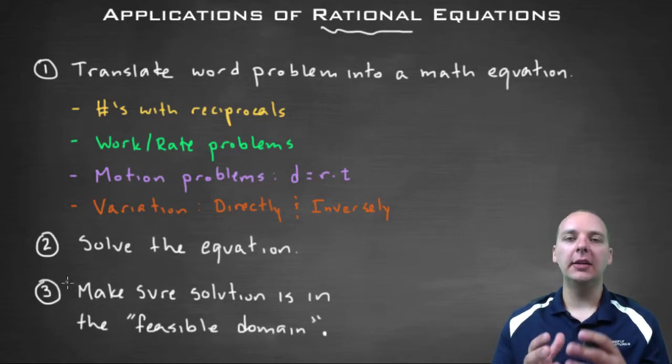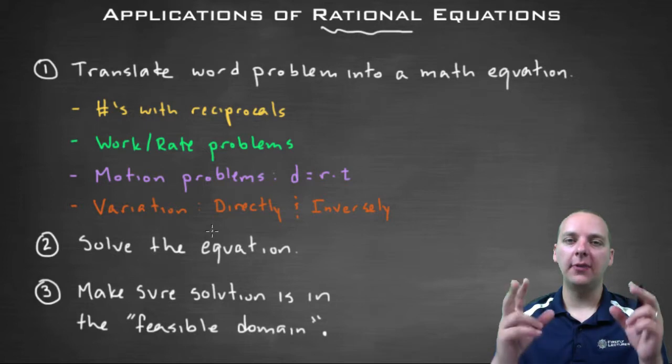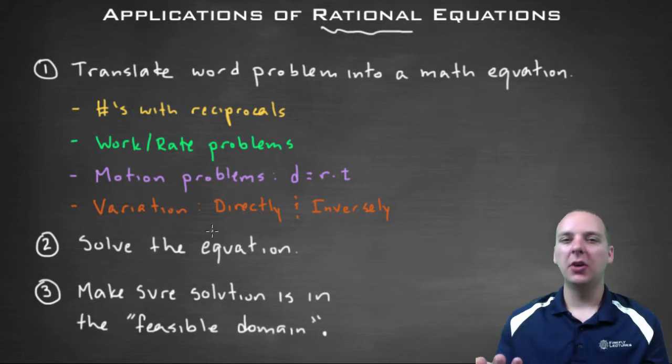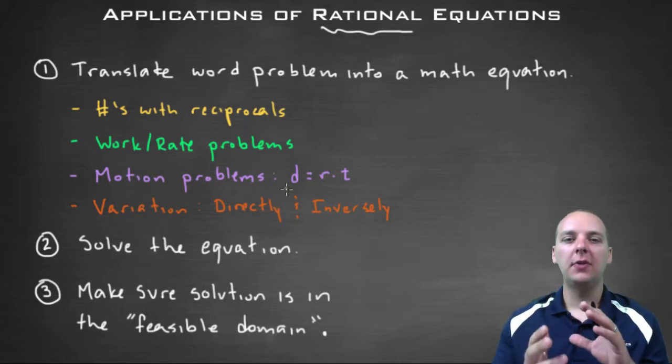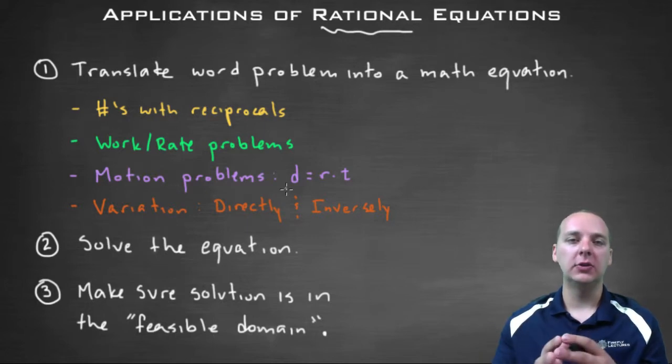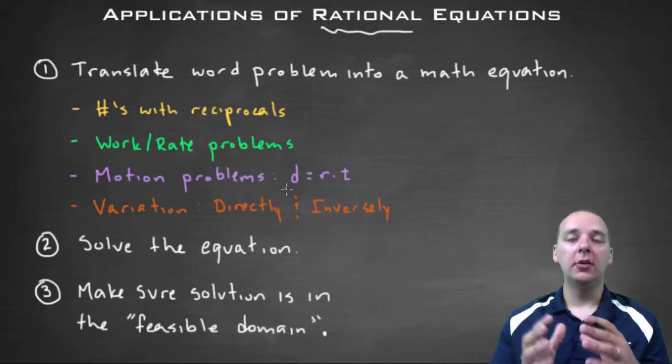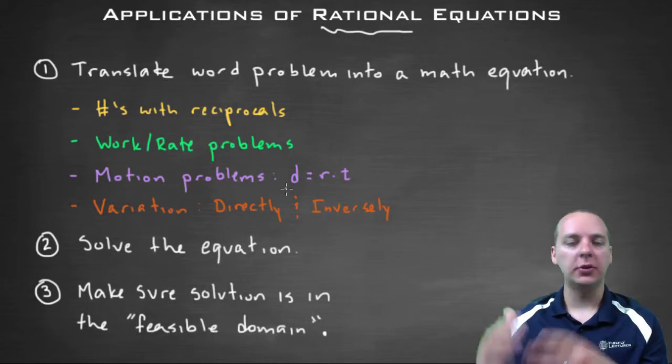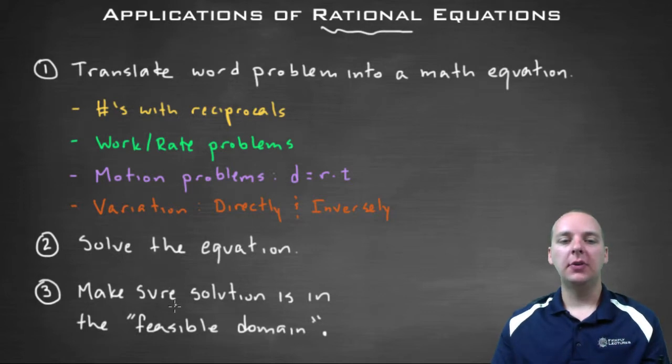And then the last thing we'll do when we get our answer: because these are application problems, you have to be real careful with your answer. You have to make sure it falls into what you would call a feasible domain. Feasible domain is basically just a domain of answers that would make sense. I'll give you a quick example: let's say you're doing a motion problem, and you do all the algebra, you set everything up, you solve it, and you get a time equal to negative eight. Well, time can't be negative, so maybe that answer wouldn't be valid. So if your two answers were maybe negative eight and positive five, you would toss out the negative eight answer because time can't be negative, and your one true answer would be positive five hours or whatever the case may be. So you have to be kind of careful with your solutions when you're talking about these application problems.